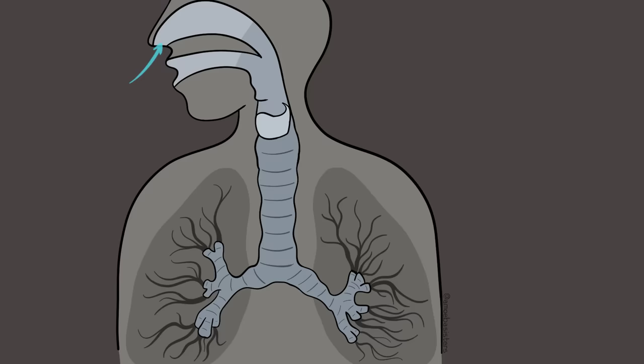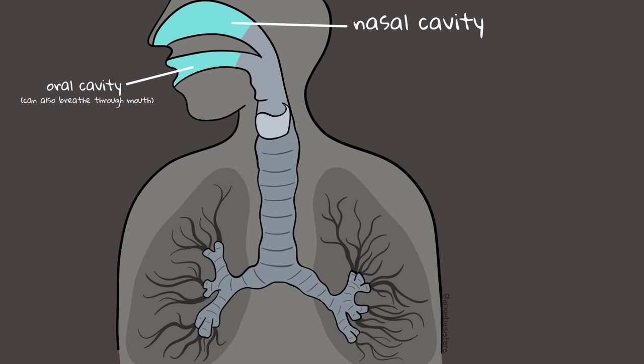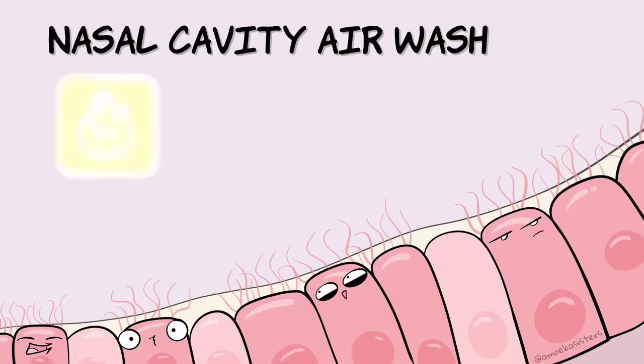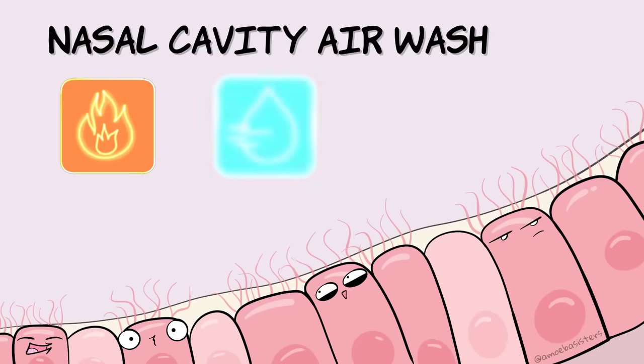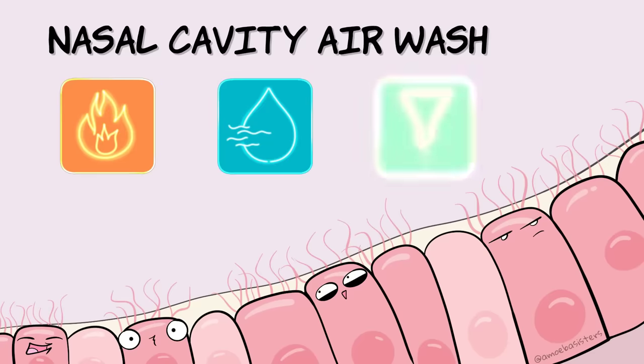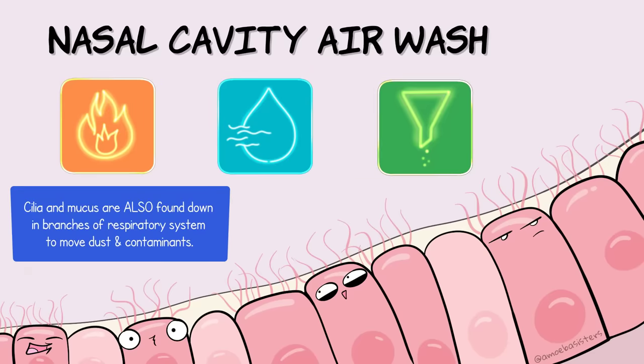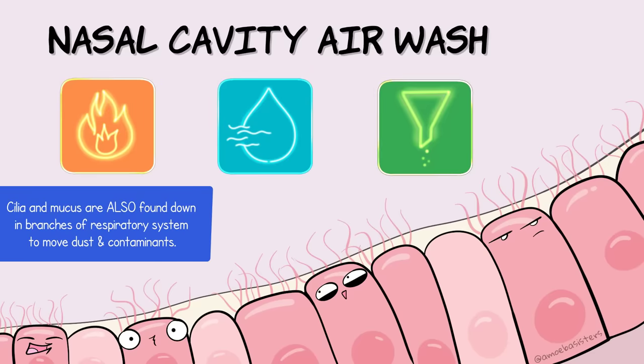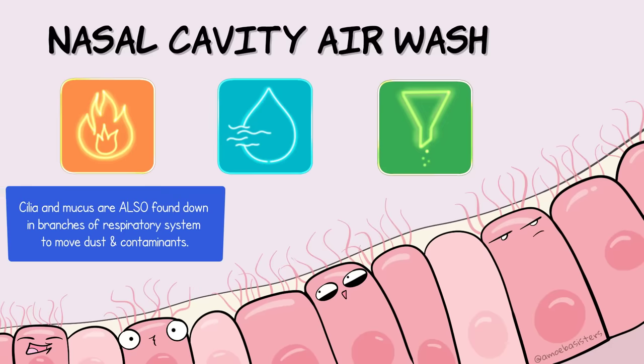So you inhale — air passes through your nasal cavity where it is warmed, humidified, and filtered. This involves mucus and hairs: nasal hairs that you can see, and then microscopic cilia, which are similar to microscopic hair-like structures.